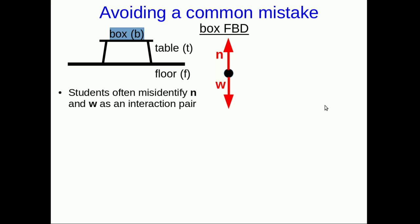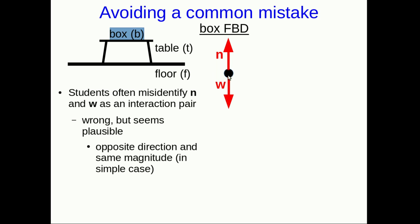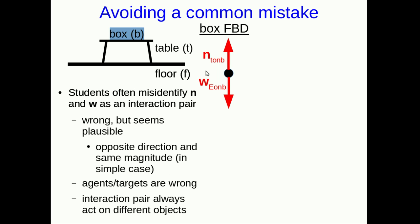Here's a common mistake that I often see students make. Think about a box on a table on a floor. And students will often misidentify the normal and the weight as an interaction pair. The reason they make that mistake is that it seems plausible. These two forces are in opposite directions, and if you understand Newton's second law, then you realize they also have the same magnitude. But of course that's actually only true in a simple case like this. All you have to do is put the box on a slope, and all of a sudden the normal isn't in the opposite direction to the weight. But the real problem here is that the agents and targets are wrong. Remember that in an interaction pair, the agent and the target are just reversed between the two forces, but that's not going on here. These are both forces acting on the box, and they're by different agents. An interaction pair will always act on different objects, because the target of one is the agent of the other.